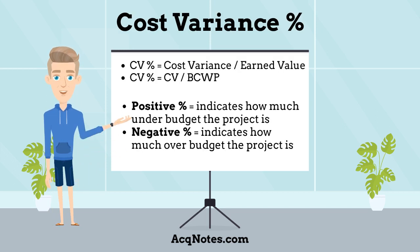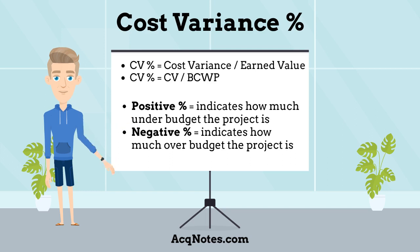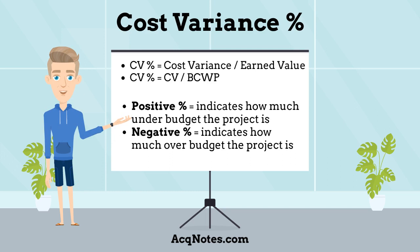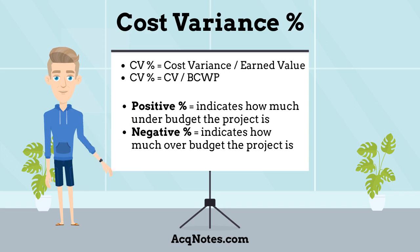The second cost variance type is Cost Variance Percentage. It can be calculated using the following formulas: Cost Variance Percentage equals Cost Variance divided by Earned Value, or Cost Variance divided by Budgeted Cost of Work Performed. Cost Variance Percent indicates how much over or under budget the project is. A positive percentage indicates how much under budget the project is.